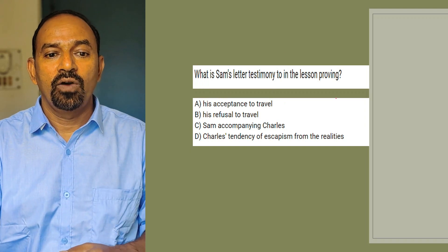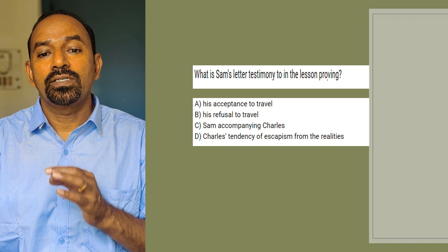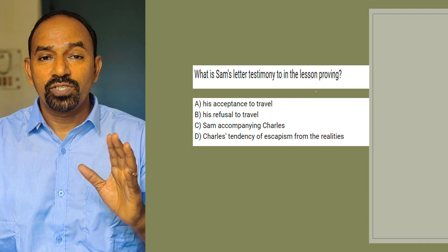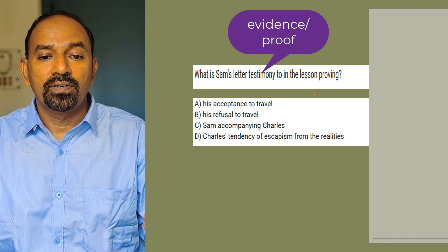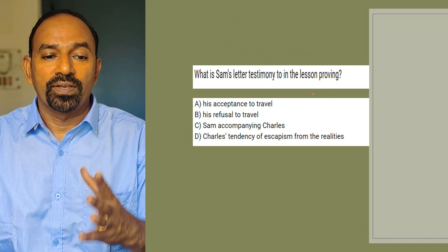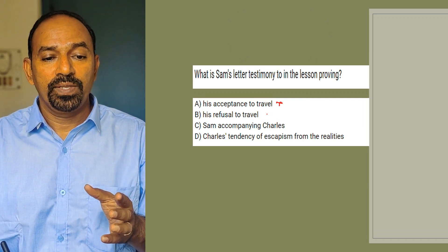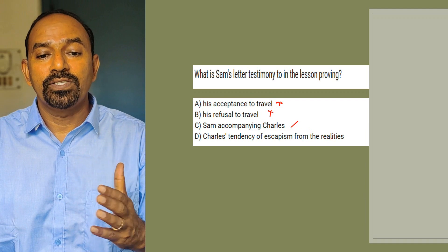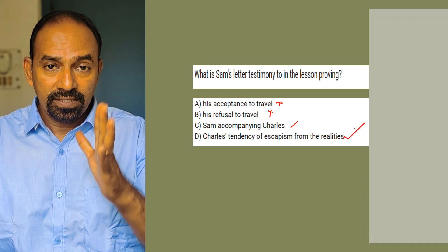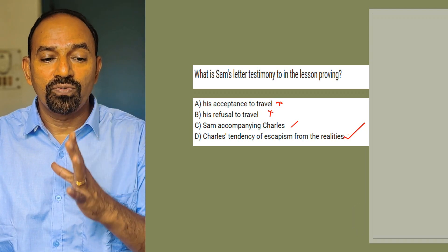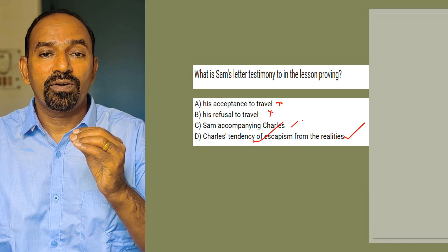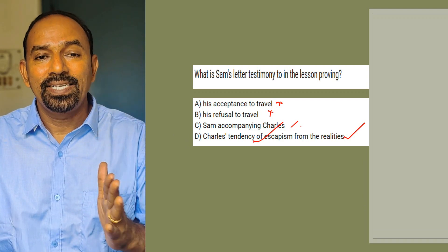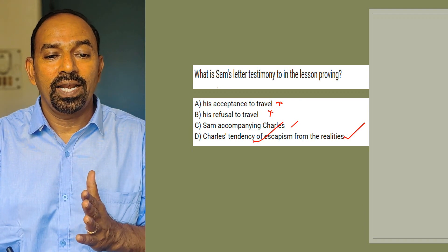Next question: What is Sam's letter testimony proving in the lesson? Options: his acceptance to travel; his refusal to travel; Sam accompanying Charles; Charles' tendency of escapism from the realities. Sam's letter is a proof of Charles' tendency of escapism from the realities — not Sam accompanying Charles, but Charles' tendency of escapism from the truth. That is Sam's letter testimony.